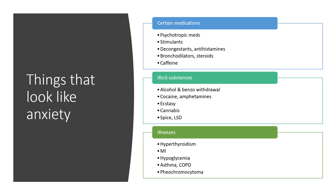Let's look at some things that could look like anxiety: certain medications including psychotropic meds, stimulants, decongestants, antihistamines, bronchodilators, steroids, and caffeine — a big culprit that can look like anxiety. Illicit substances including alcohol and benzo withdrawal, cocaine, amphetamines, ecstasy, cannabis, spice, LSD, and crack can all contribute. Medical illnesses such as hyperthyroidism, MI (heart attack), hypoglycemia, asthma, COPD, and pheochromocytoma can also present similarly.